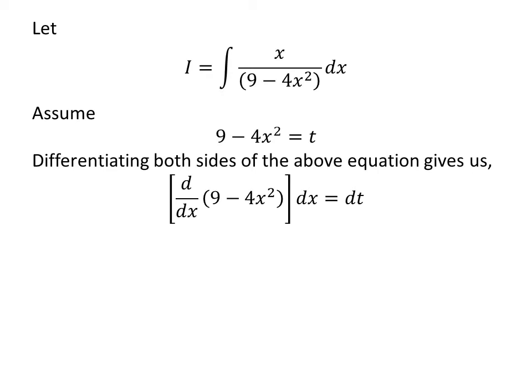Let's find the value of the differential of t. Taking the differential of both sides of the above equation gives us the derivative of 9 minus 4x squared with respect to x times dx equals dt.